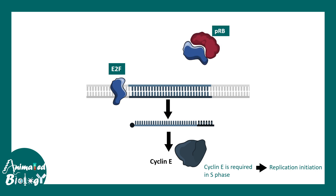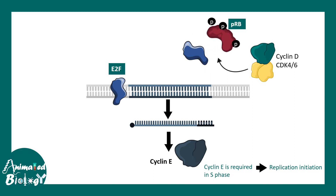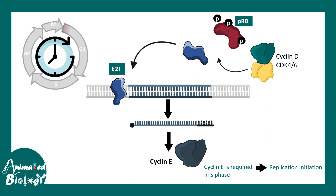E2F can only do its job when PRB allows it. When PRB is bound with E2F, E2F cannot bind to the DNA. But when PRB is phosphorylated with the help of cyclin D and CDK4-6, the hyperphosphorylated variant of PRB releases E2F. E2F can then bind to the DNA and allow progression of the cell cycle from G1 to S.